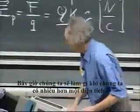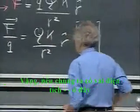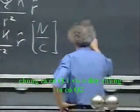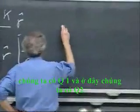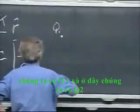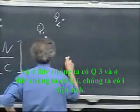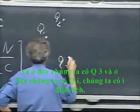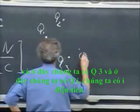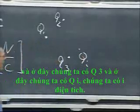What do we do now when we have more than one charge? Well, if we have several charges. Here we have Q1. And here we have Q2. And here we have Q3. And let's say here we have Q of I. We have I charges.